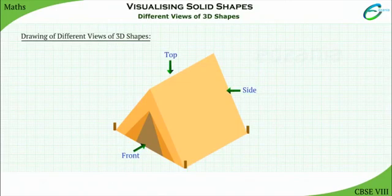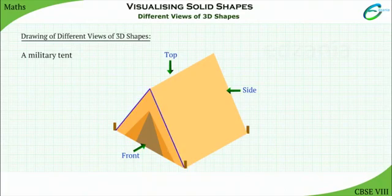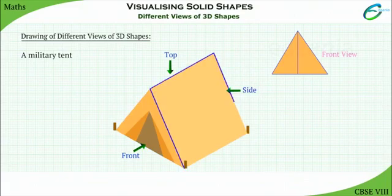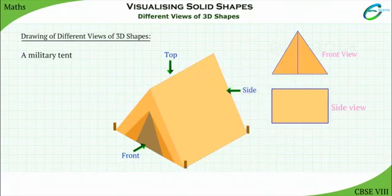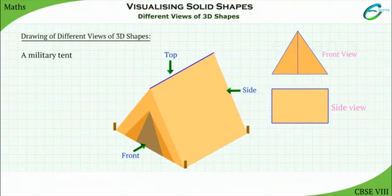Now let us learn how to draw different views of 3D objects. Here we have a military tent. Let us draw the views of the tent. Observe the drawing of front view. Observe the drawing of the side view. Observe the drawing of the top view.